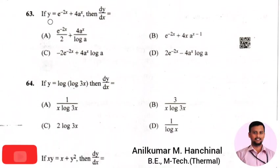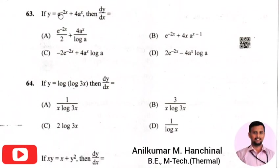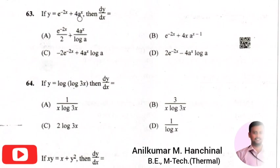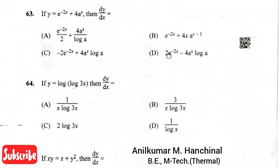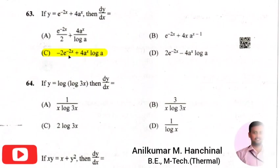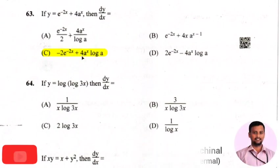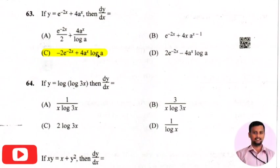The next question: if y equals e raised to minus 2x plus 4a raised to x, then dy/dx is? The right answer is option 3, that is minus 2 times e raised to minus 2x plus 4 times a raised to x times log a.